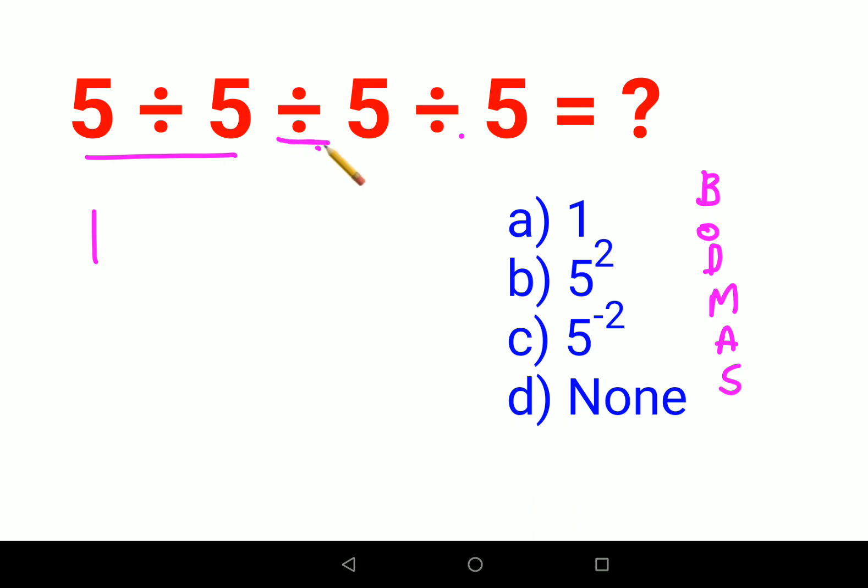Whenever you have a division sign between two numbers, you can follow the rule of KCF. Now what is K? K means keeping the first number as it is. So we had 1. 5 divided by 5 is 1.